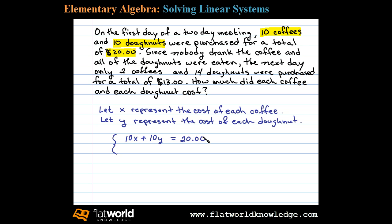Now the next day, two coffees were purchased and 14 doughnuts for a total of $13. This defines our second equation. In this case, the cost of coffee was 2 times X, plus the cost of doughnuts, 14Y, is equal to the total cost, $13.